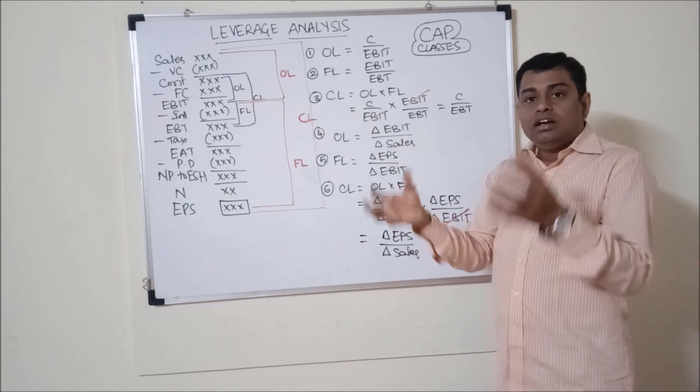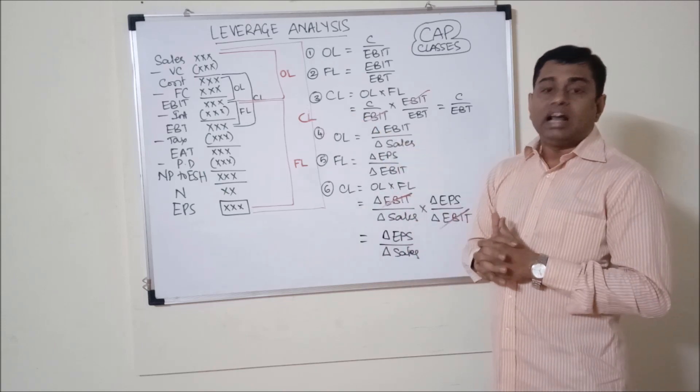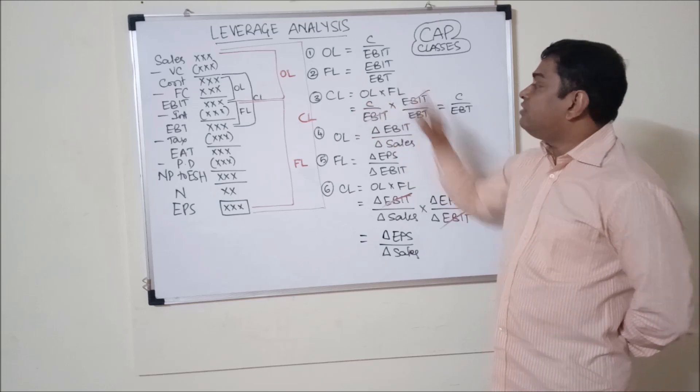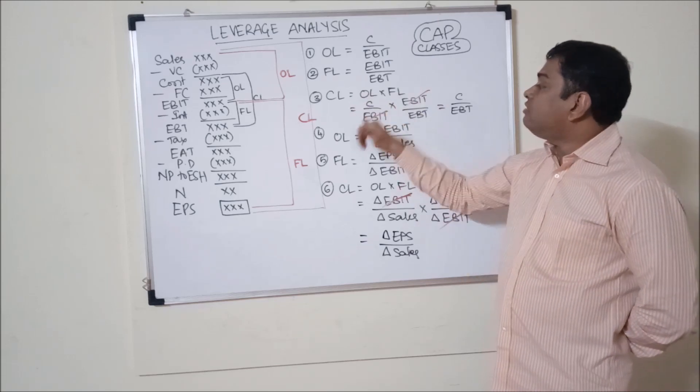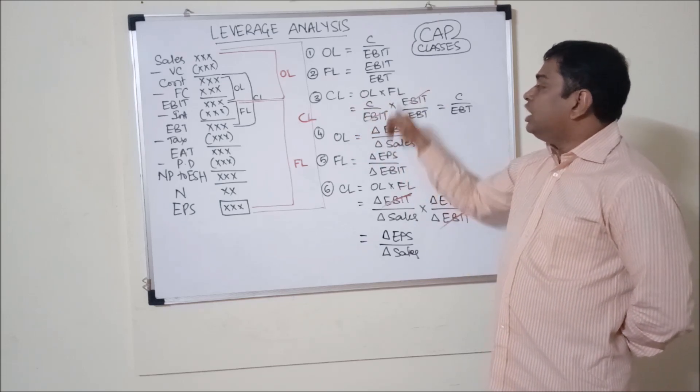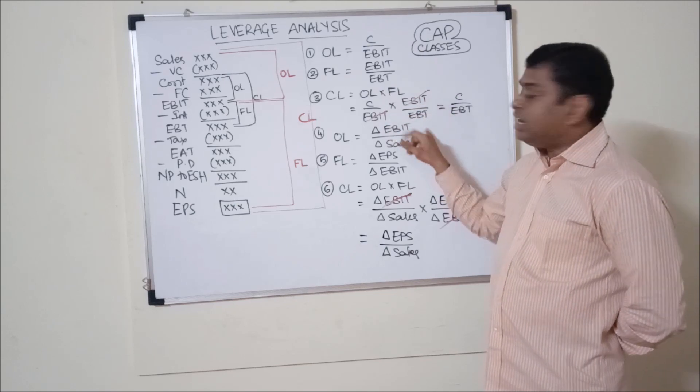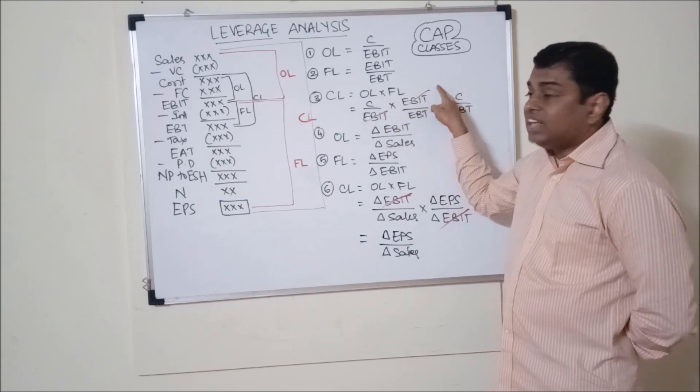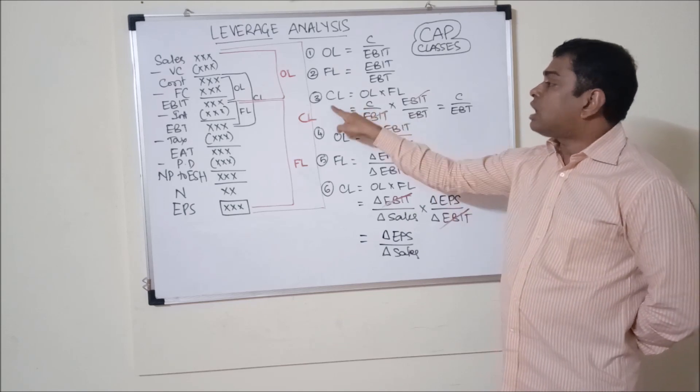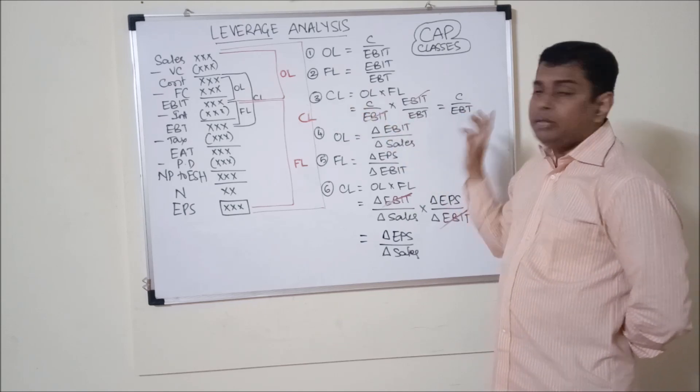Combined leverage is the accumulation of both the risks. So we multiply operating leverage and financial leverage. Operating leverage is contribution by EBIT. Financial leverage is EBIT by EBT. EBIT and EBIT is cancelled, so you will get contribution by EBT. So combined leverage is contribution by EBT.